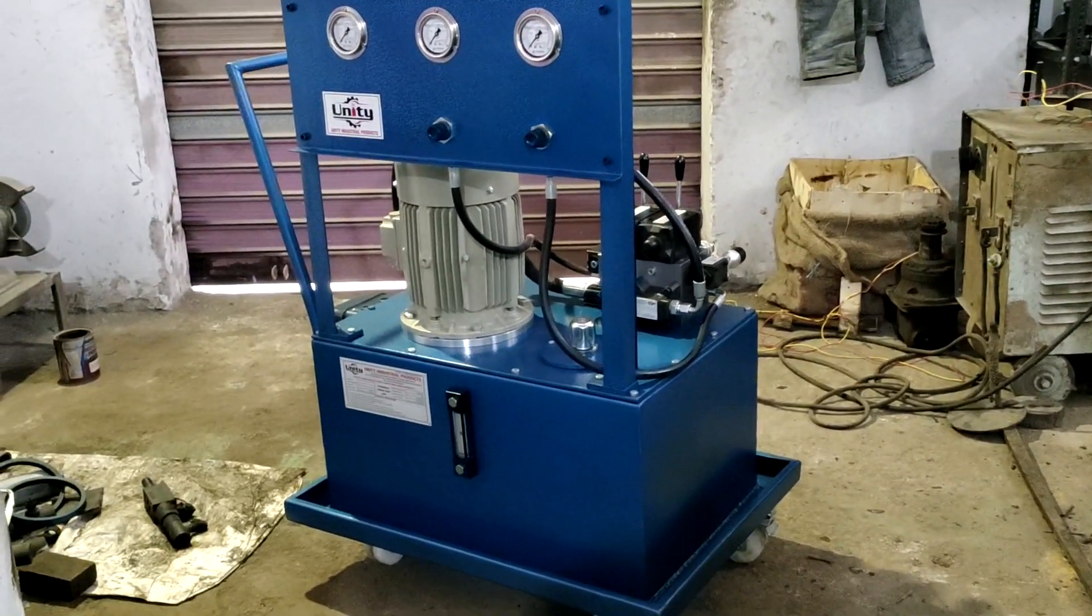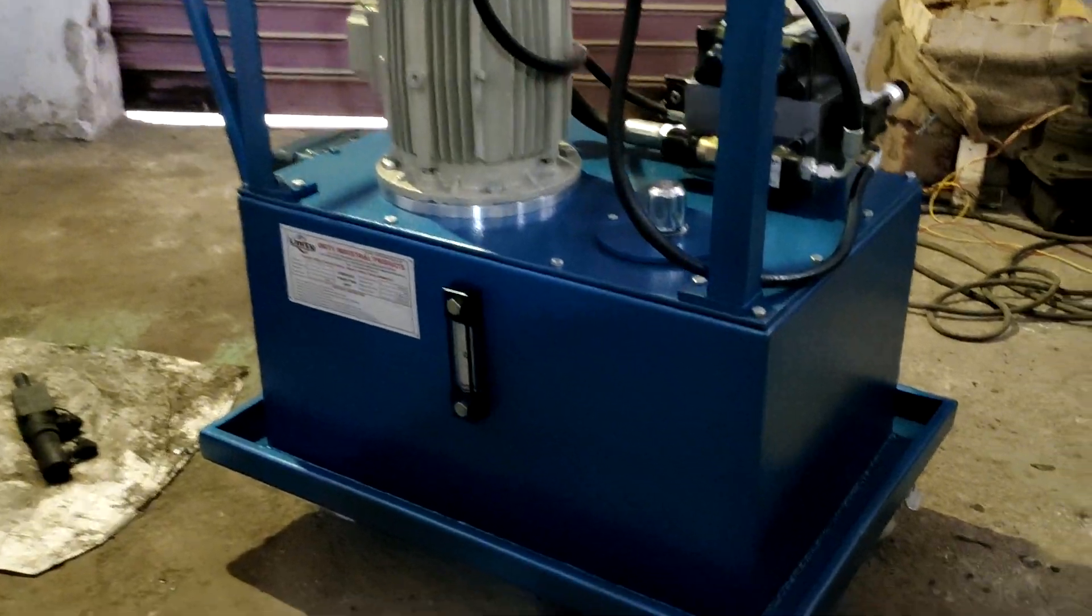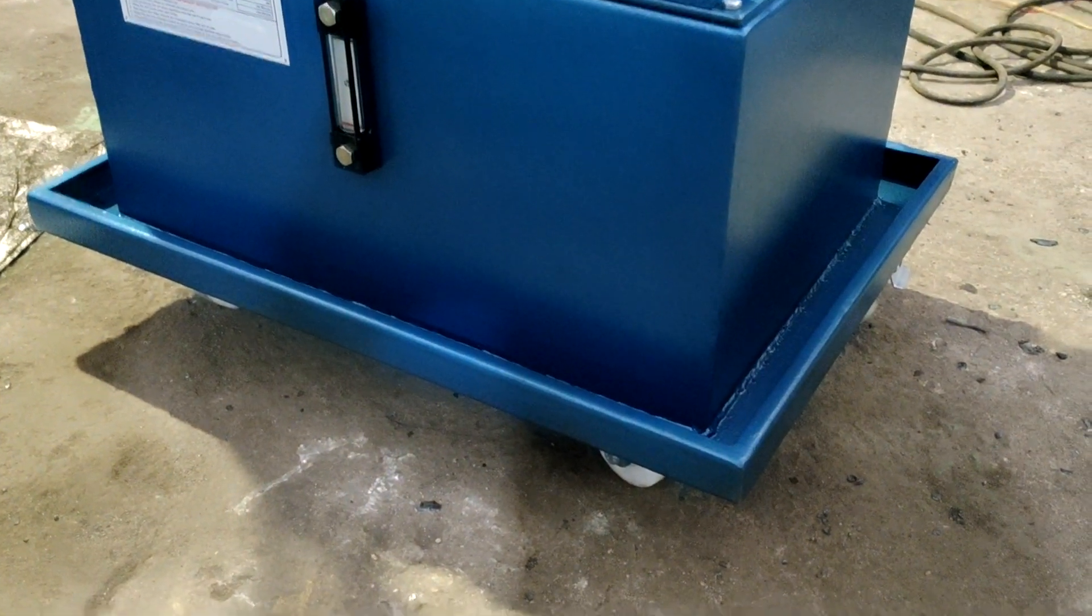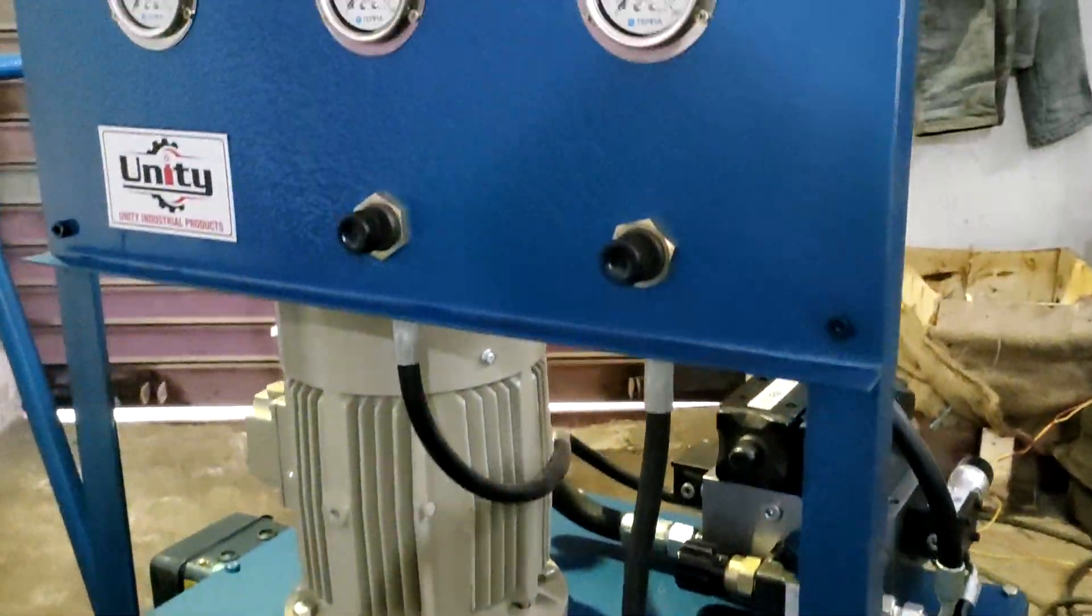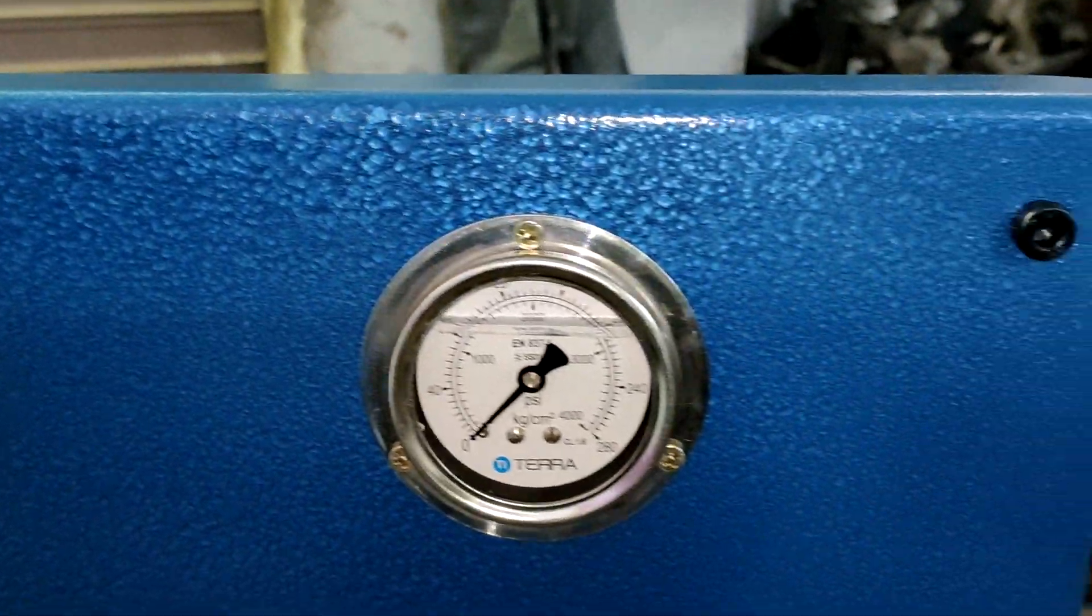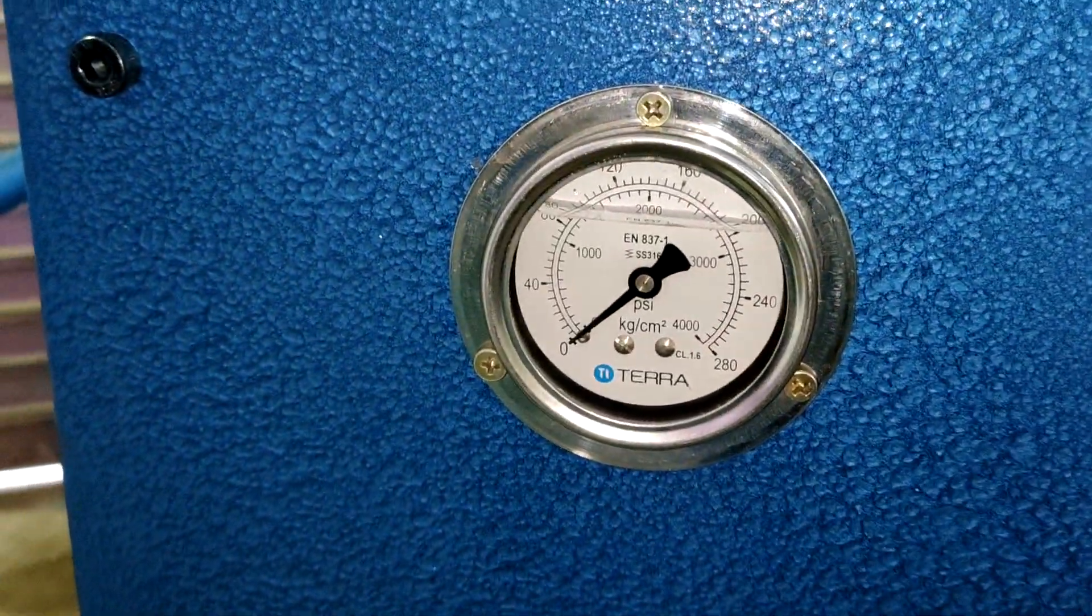This is the complete power pack you can see. These are gauge isolators for the reducing valve line. This is the main system pressure.